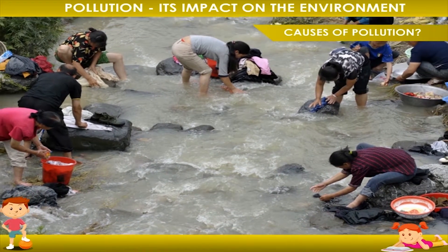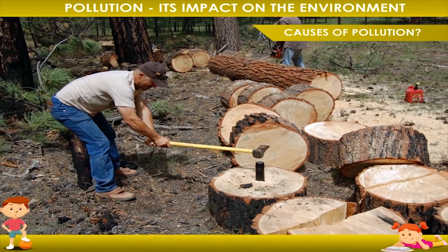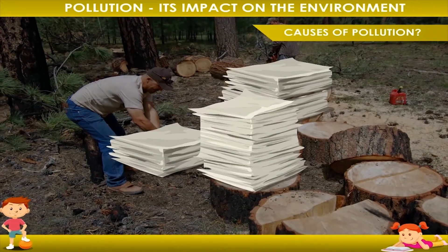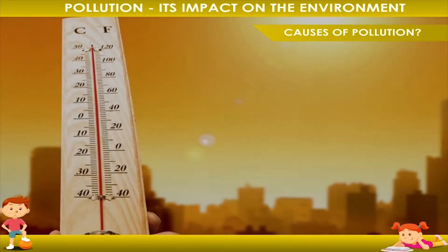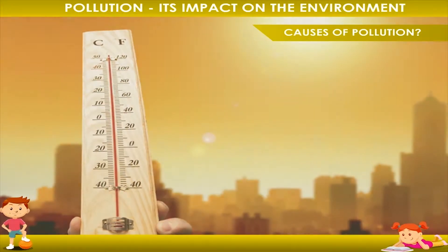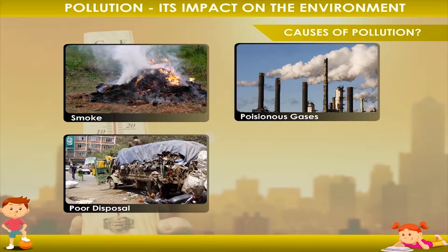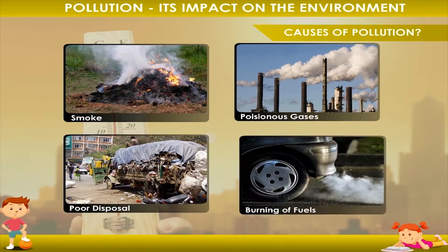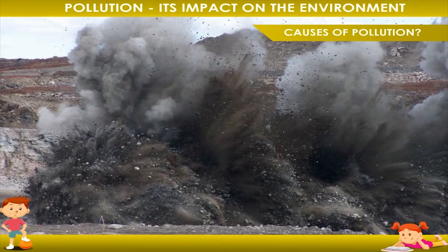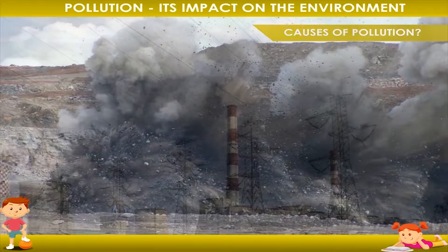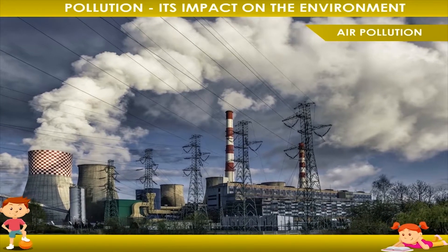Causes of pollution: The main cause of pollution is too much use of natural resources. We are cutting down forests and trees to fulfill our needs — paper is made from trees, and this cutting is causing a rise in temperature. The main causes of pollution include smokes and poisonous gases from industries and factories, poor disposal of waste products from homes and industries, burning of fuels in cities producing smoke and noise, and mining, which releases a lot of dust and smoke into the environment.